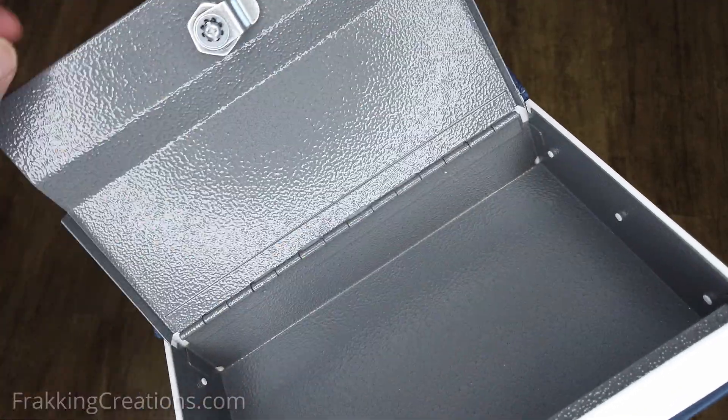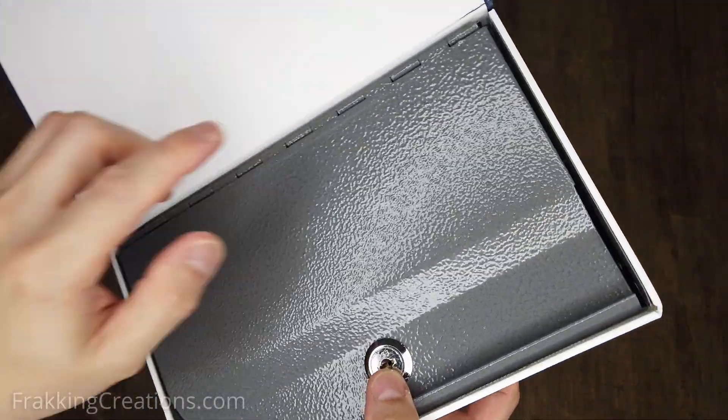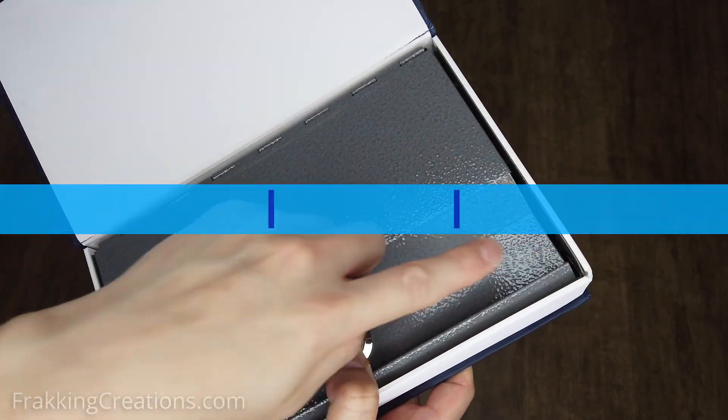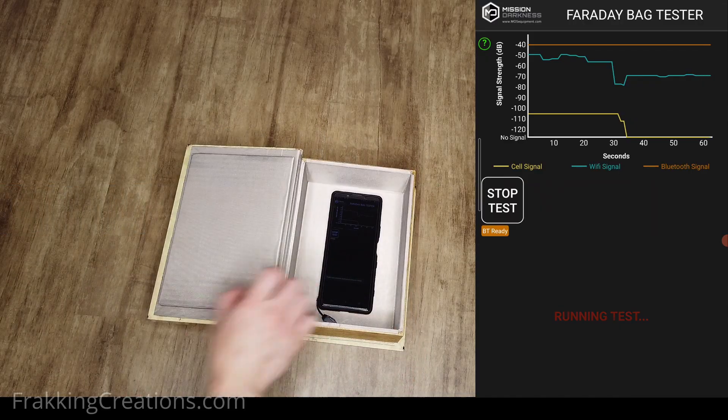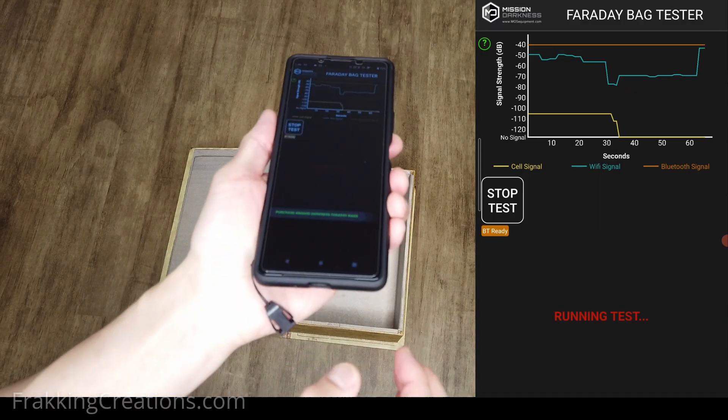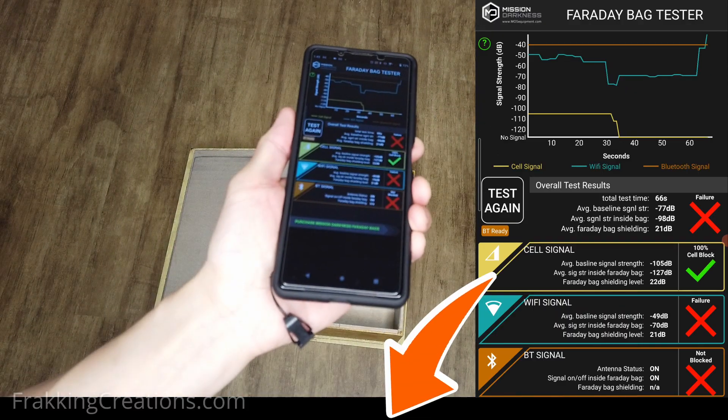You just need to make sure you seal the box from any radio frequency leakage and test it out properly. Throughout the process, we are going to use this app to test for leakage of cell, Bluetooth, and Wi-Fi radio signals. You can do the same too. Find links to the Android and iOS apps in the video description below.